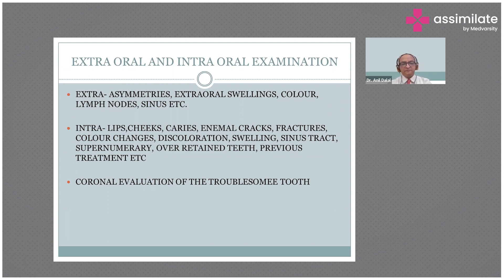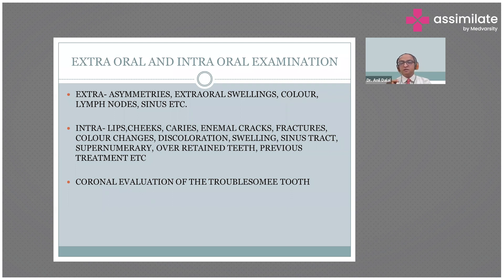Another element is coronal evaluation of the troublesome tooth. We check the color change in the tooth, and we check for deep grooves — for example, in upper lateral incisors there can sometimes be a deep palatal groove. In that deep palatal groove, there may be a pocket or the groove may extend to the horn of the pulp, which has caused slow irritation and made the pulp necrotic or asymptomatic.